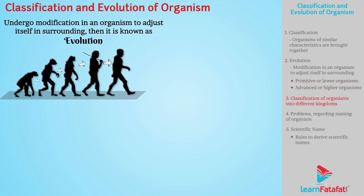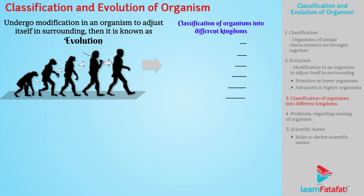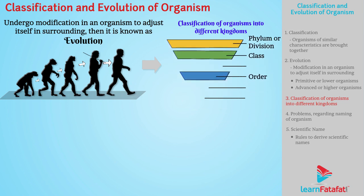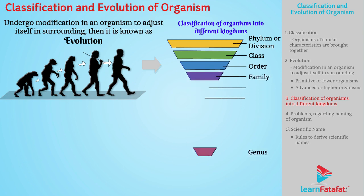This led to the classification of organisms into different kingdoms, which were again divided into sub-levels like phylum or division, class, order, family, genus, and species.